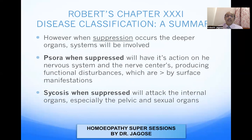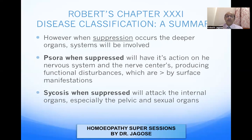When suppression occurs, the deeper organ systems will be involved. The disease will travel from the less important organs to more important organs, from the periphery to the center. Psora, when suppressed, will act on the nervous system and nerve centers, producing functional disturbances which are better by surface manifestations. Sycosis, when suppressed, will attack the internal organs, especially the pelvic and sexual organs.